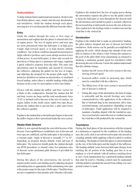Deceleration: explain to the student that to make an autorotative landing, the pilot reduces airspeed and rate of descent just before touchdown. Both actions can be partially accomplished by applying aft cyclic, which changes the attitude of the rotor disk in relation to the relative wind. During this maneuver, the goal of the pilot shifts from maintaining an airspeed to attaining a minimum ground speed for touchdown while decreasing the rate of descent. This attitude change inclines the lift vector of the rotor system to the rear, slowing forward speed. Increased airflow results in increasing RPM, which must be controlled with the collective. During this stage, the lack of torque is noticeable and the aircraft fuselage may rotate counterclockwise with application of the collective due to frictional drag in the transmission, drivetrain, associated pumps, and generators.